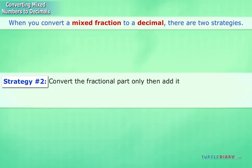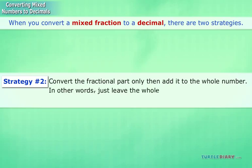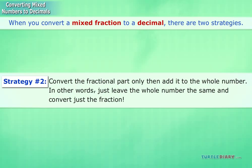In other words, for Strategy 2, just leave the whole number the same and convert just the fraction part to a decimal.